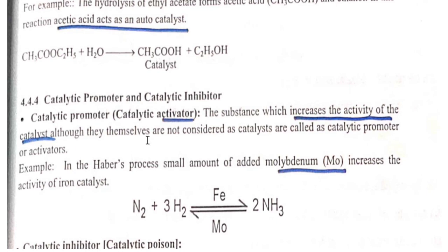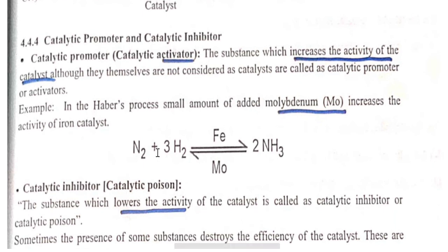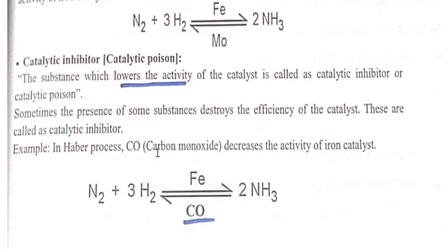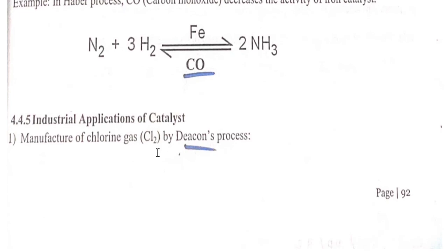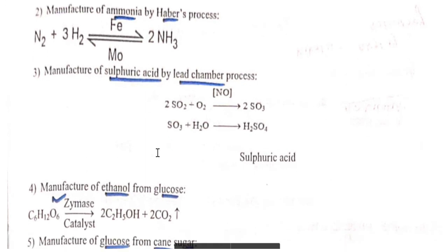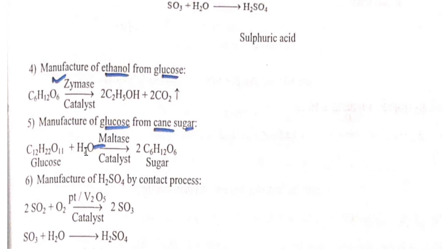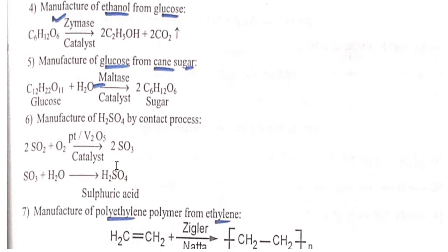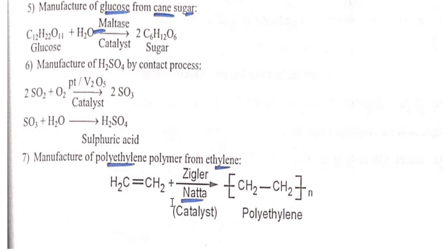Catalytic promoter increases the activity of the catalyst — for example, molybdenum acts as a promoter in the Haber process. Catalytic inhibitor lowers the activity of the catalyst — for example, carbon monoxide decreases the rate of reaction in the Haber process. Industrial applications of catalysts: manufacturing of chlorine gas by Deacon process; manufacturing of ammonia by Haber process; manufacturing of sulfuric acid by lead chamber process; manufacturing of ethanol from glucose using zymase as catalyst; manufacturing of glucose from cane sugar using maltase as catalyst; manufacturing of H2SO4 by contact process using platinum or vanadium pentoxide as catalyst; and manufacturing of polythene from ethylene using Ziegler-Natta catalyst.